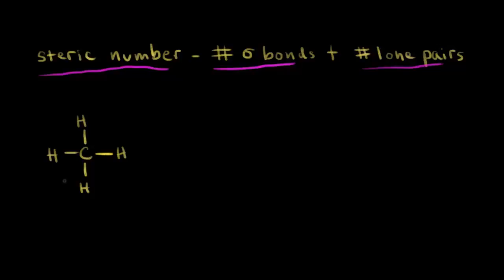Let's go ahead and do it for methane. The steric number is equal to the number of sigma bonds. I look around my carbon and I see one, two, three, and four sigma bonds. I have zero lone pairs of electrons around that carbon. So four plus zero gives me a steric number of four.